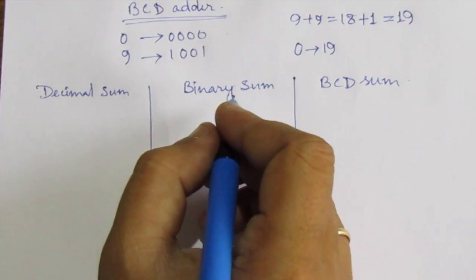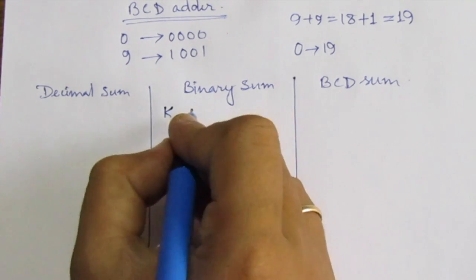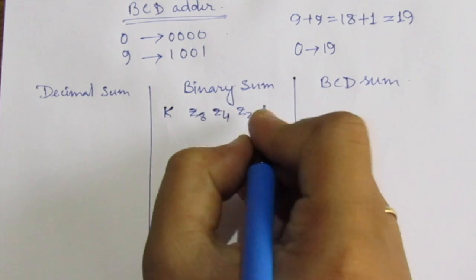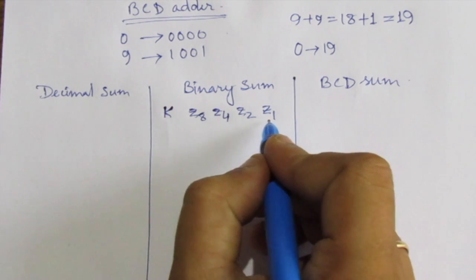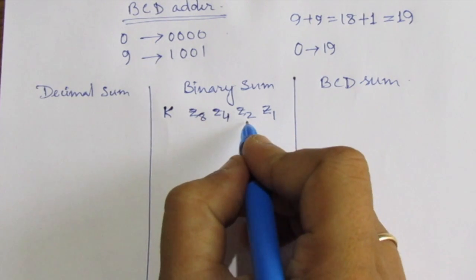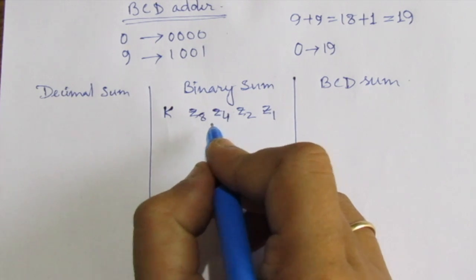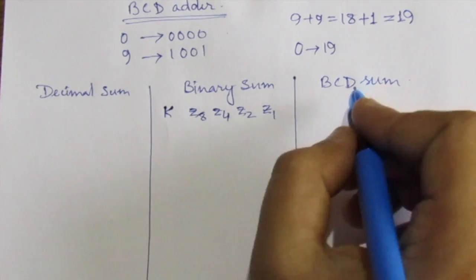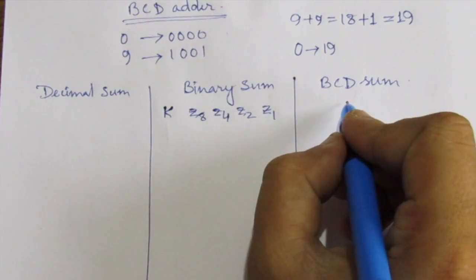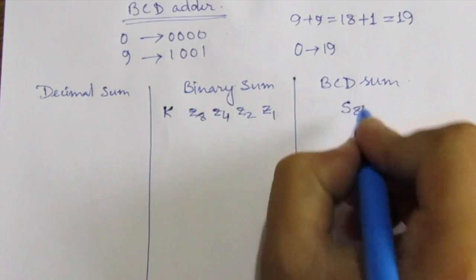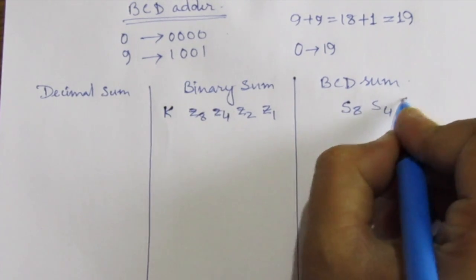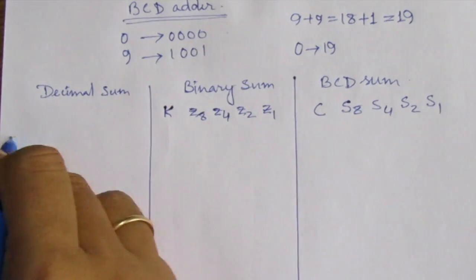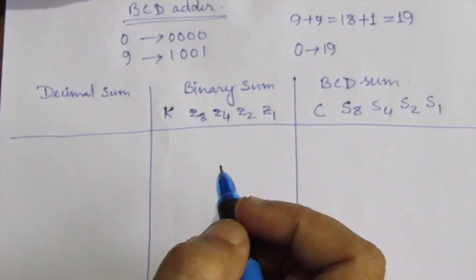In case of binary sum, we are writing it as K, z8, z4, z2, and z1. So here it means 2 to the power 0 equals 1, 2 to the power 1 equals 2, 2 to the power 2 equals 4, and 2 to the power 3 equals 8. And this one is the carry term, the output carry term. In case of binary, we also have sum s8, s4, s2, s1, and we have a carry c. So we will try to represent from 0 to 19.